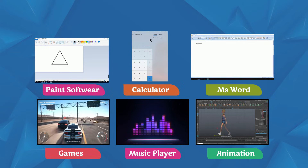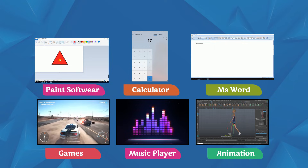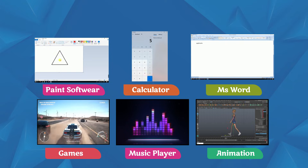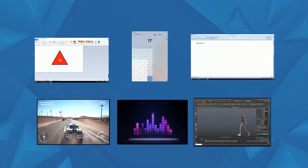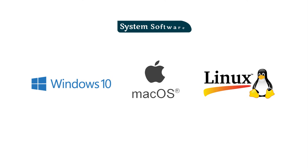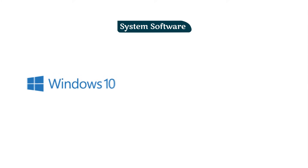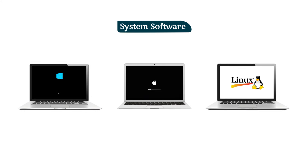Below are pictures of some application software: Paint, Calculator, Board Games, Music Player, and Animation. System software helps to run the computer hardware and system. When we start the computer, system software also starts with it. System software is like the manager of the computer — it helps to manage all hardware and software activities.